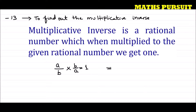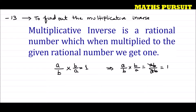How does it happen? Let's see. a upon b, into b upon a, is equal to ab upon ba, which is equal to 1. This is how the terms cancel out. This is what is meant by multiplicative inverse.